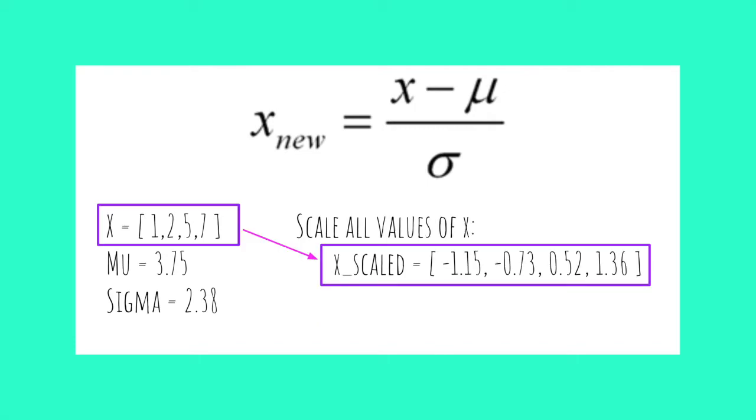This shows us the entire list after being scaled. You can see some numbers are positive and some are negative. The list takes on a range of negative 1.15 to positive 1.36. The reason I said the scale would exist between negative three and positive three is that statistically speaking, about 99% of data that has a normal distribution will take on a value between negative three and positive three standard deviations from the mean.